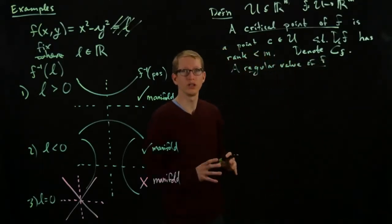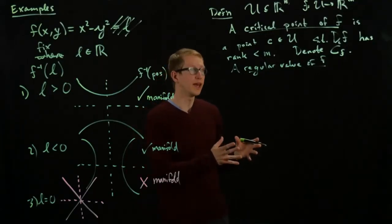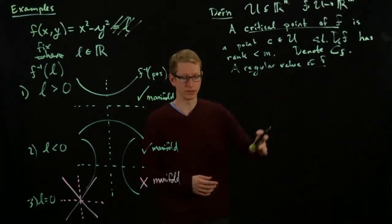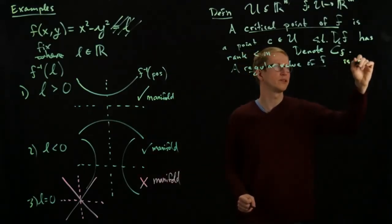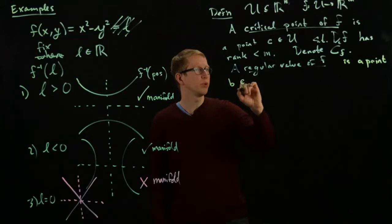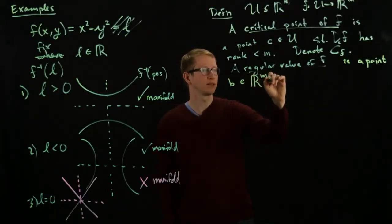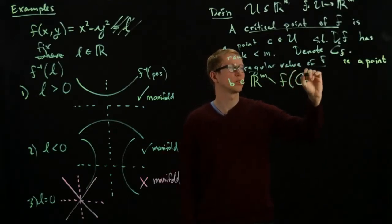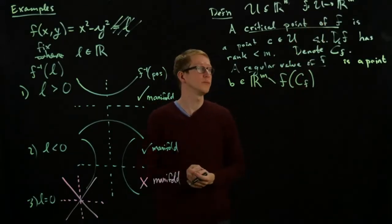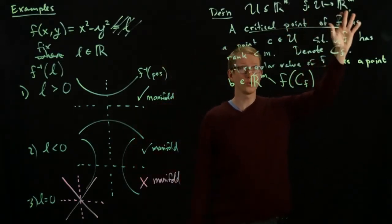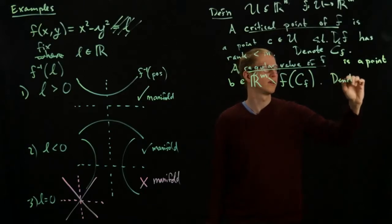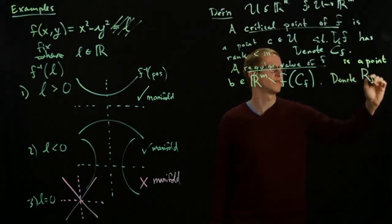This is going to be, we're going to look at all the possible elements in the codomain, and it's a regular value if it's not in the image of the set of critical points. So we have a regular value of f is a point, let's say, let's call it b, b is a point in the complement of the image of the set of critical points. So the set of critical points is a subset of the domain of the function, and the set of regular values is a subset of the codomain of that function. And we'll give examples in a moment. And let's denote by this set as, let's say, rf for regular values.